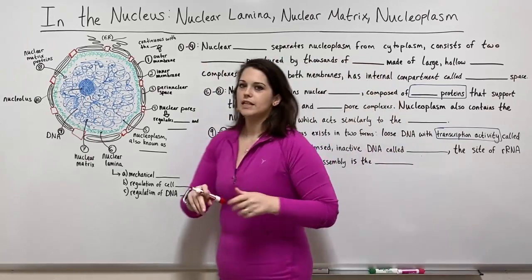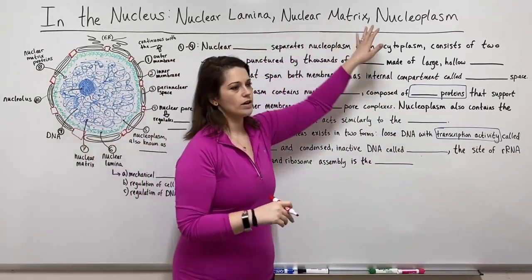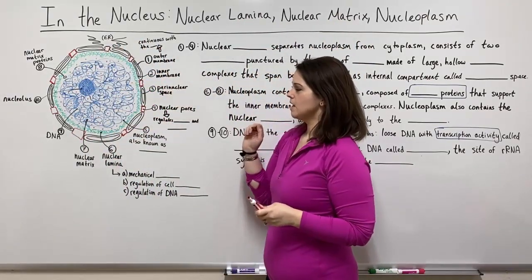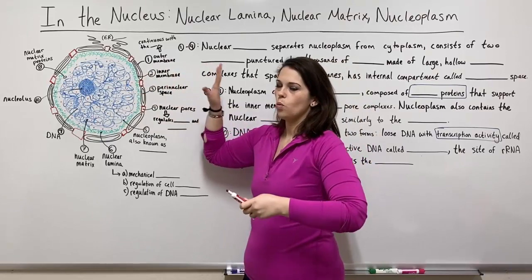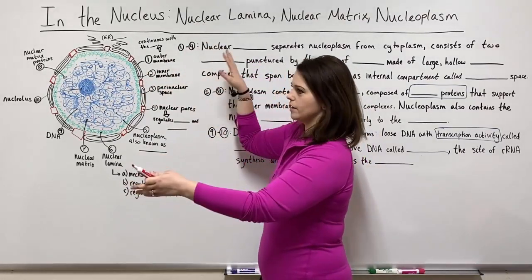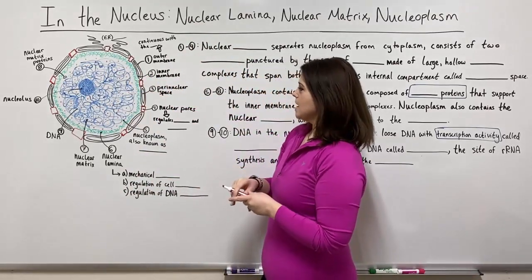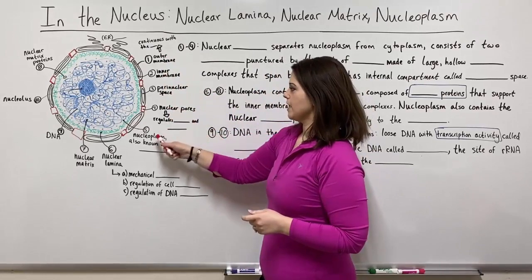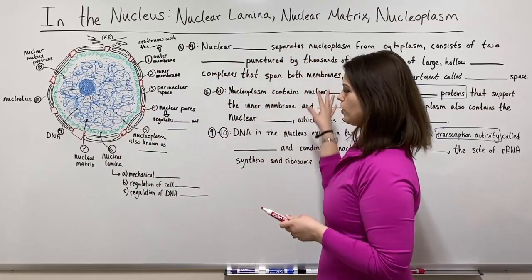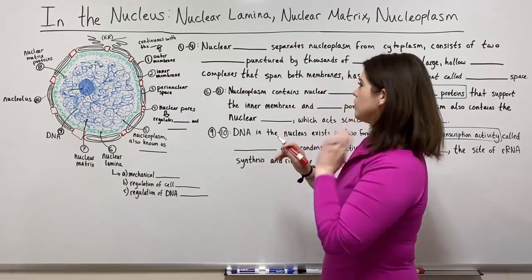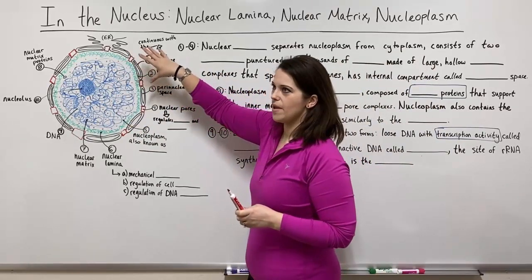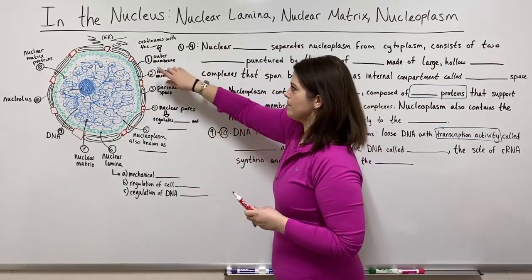In the nucleus we're focusing on things like the nuclear lamina, the nuclear matrix, and the nucleoplasm. Here I have drawn a diagram of the nucleus, situated within the larger cell. Outside of here there's cytoplasm and other organelles, but we're focusing on the nucleus. I have numbered various parts of the nuclear structure and I'll be referring to them as we go through the notes. First let's look at what's on the outside of the nucleus making up the nuclear boundary — this membrane system.